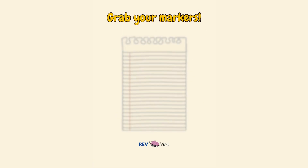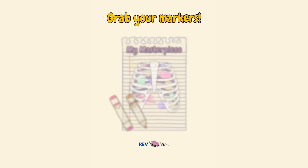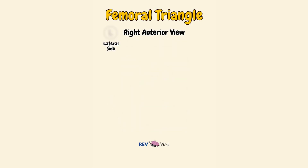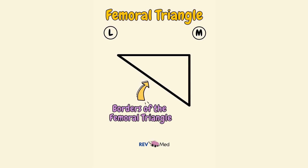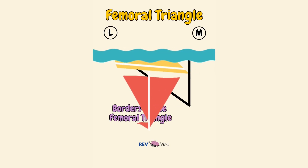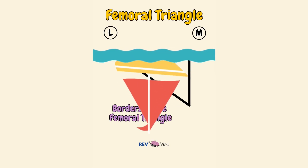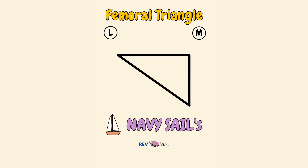First, go grab some paper and colored markers. We'll label our lateral side and our medial side. Let's draw our foundation — a triangular structure representing the borders of the femoral triangle. It sort of looks like an upside-down sailboat. Try to remember that the navy sails.